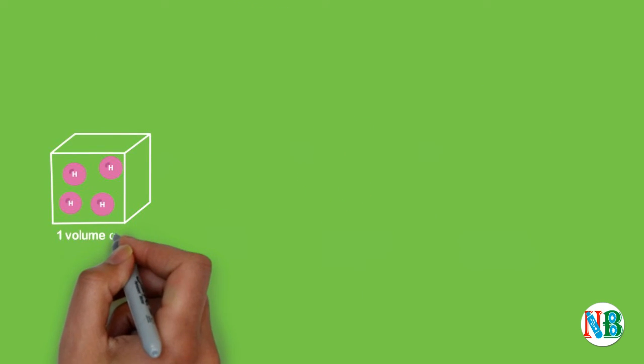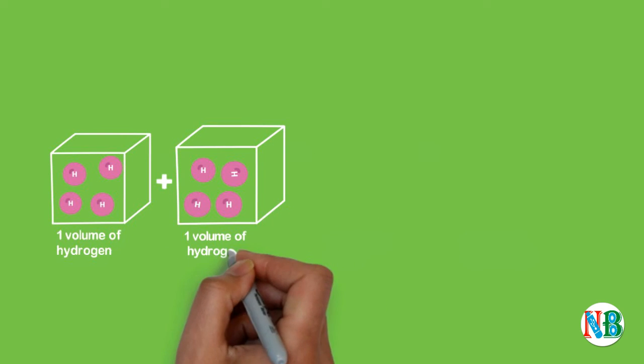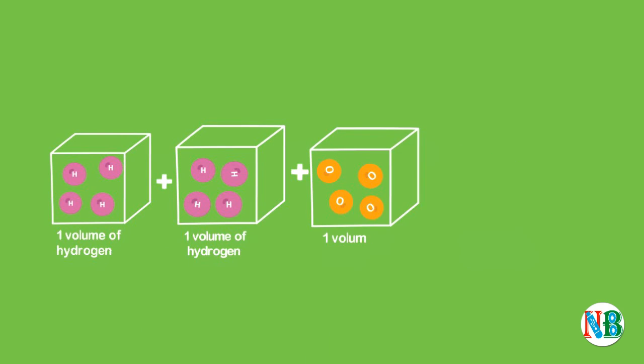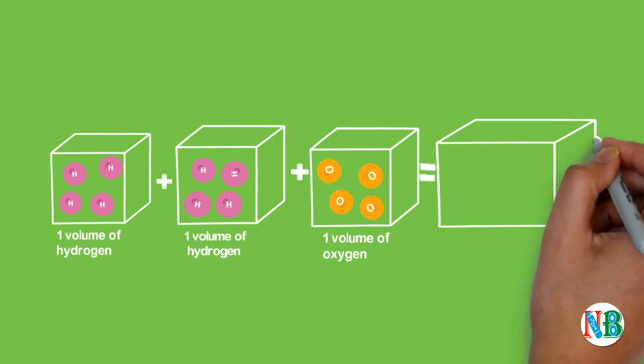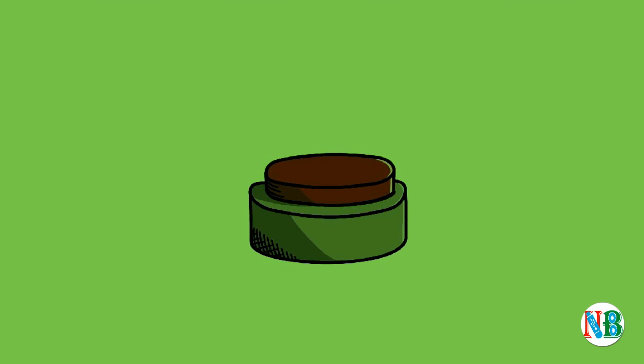For example, let two volumes of hydrogen react with one volume of oxygen to give two volumes of water vapor. We see that two volumes of hydrogen combine with one volume of oxygen to give two volumes of water without leaving any unreacted oxygen.